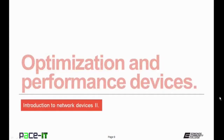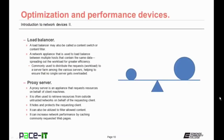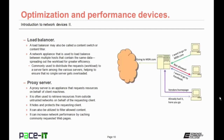Now let's talk about optimization and performance devices. We will begin with the load balancer. A load balancer — also called a content switch or content filter — is a network appliance used to load balance between multiple hosts that contain the same data. This spreads out the workload for greater efficiency. They're commonly used to distribute requests or workload to a server farm among various servers, helping to ensure that no single server gets overloaded with work requests.